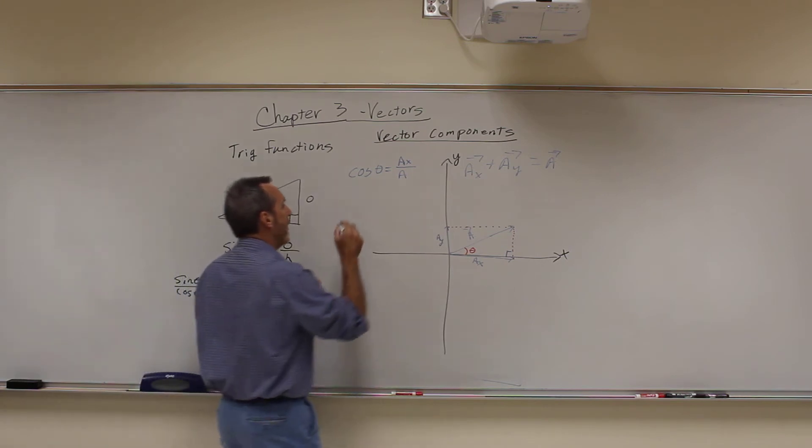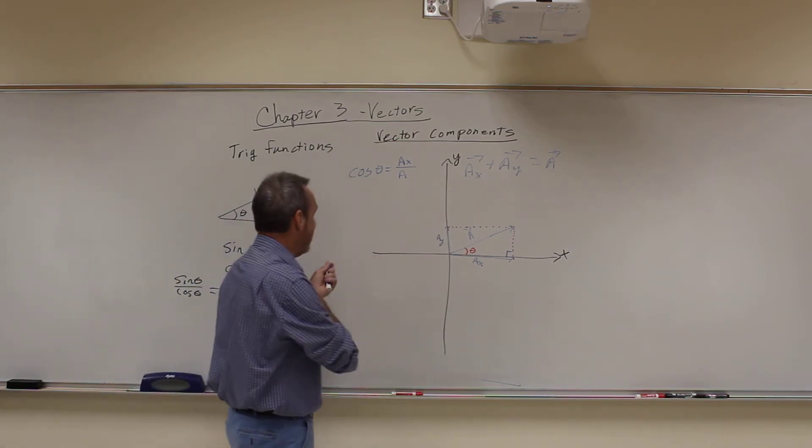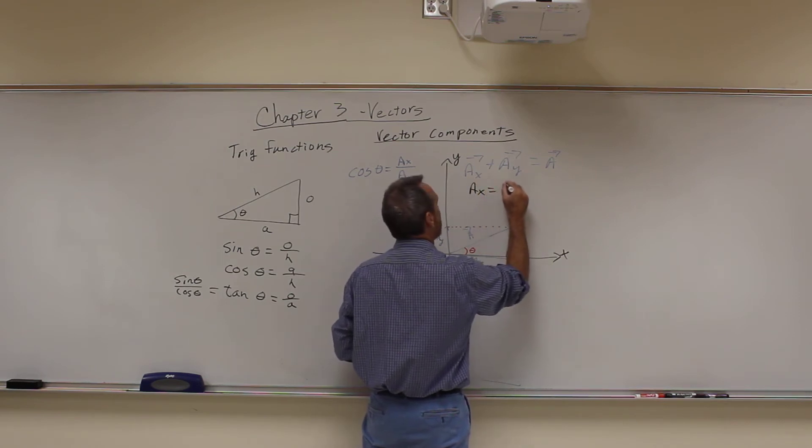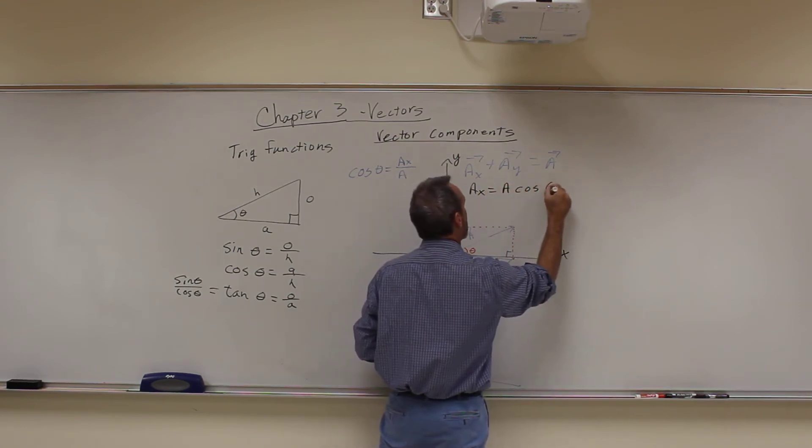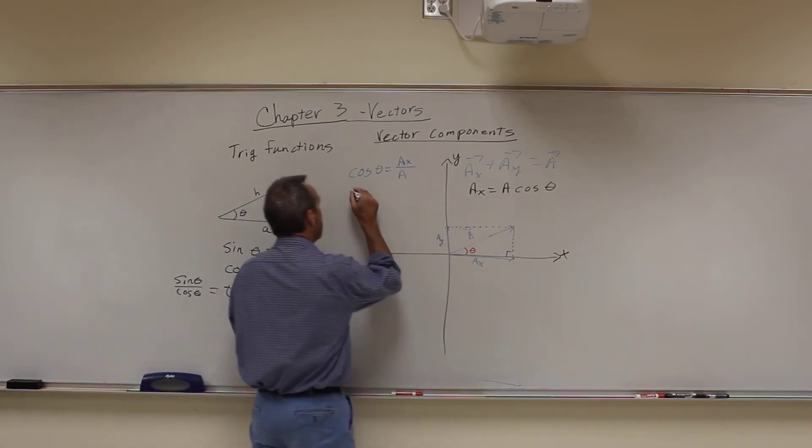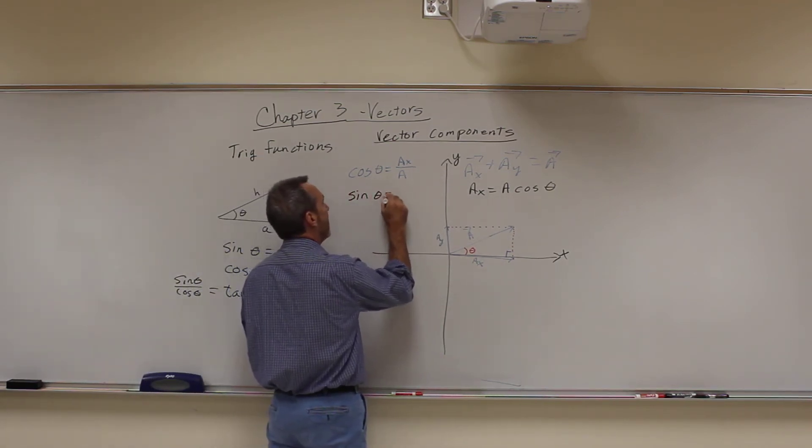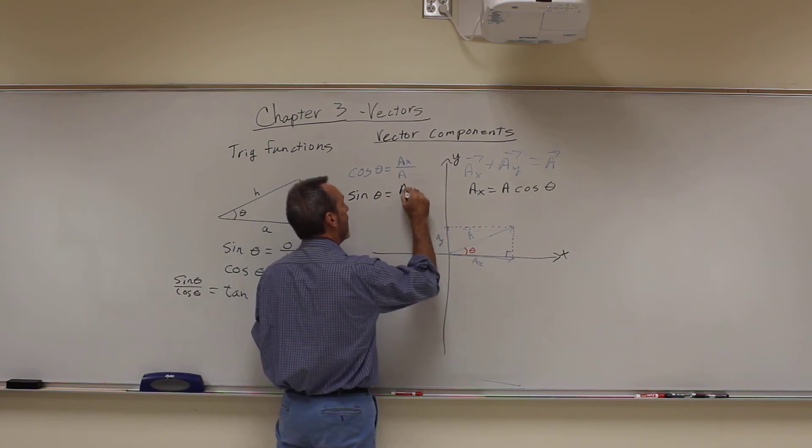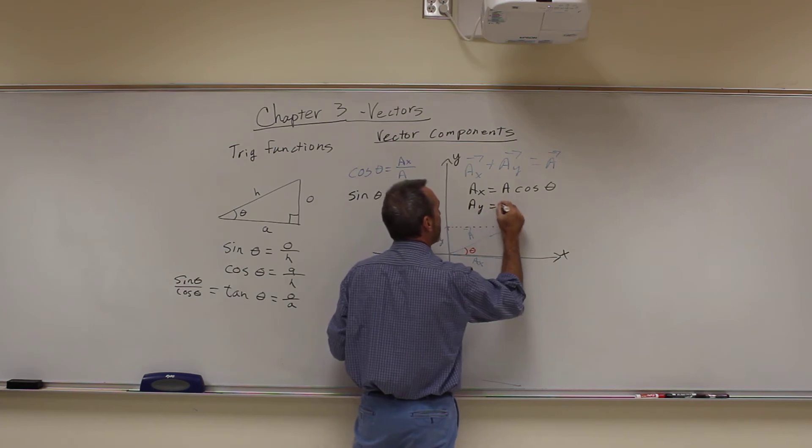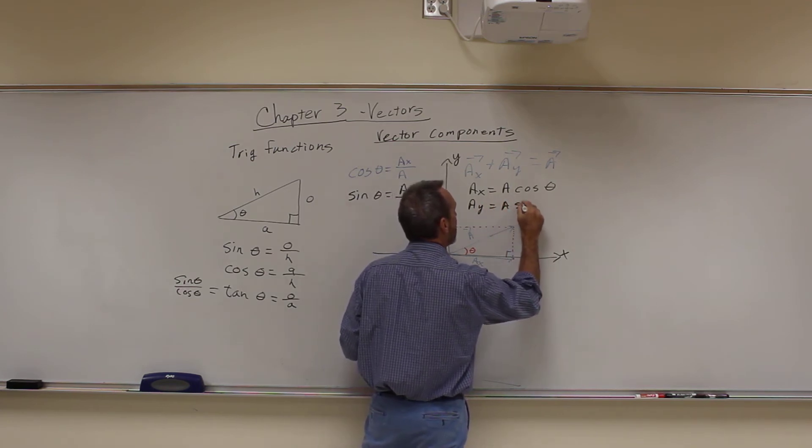Or the way we usually write this is that AX is equal to A cosine theta. Where A is the hypotenuse, the magnitude of the hypotenuse. And the same thing for Y, except we're going to use sine, AY over A, where AY is equal to A sine theta.